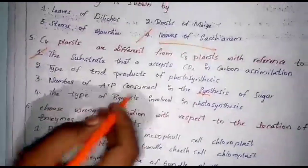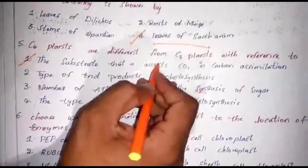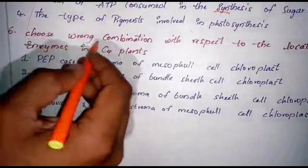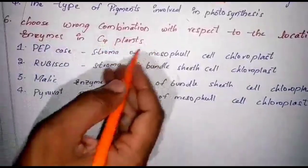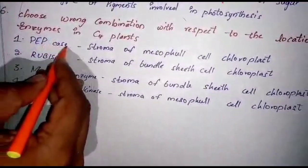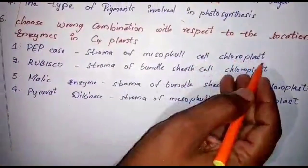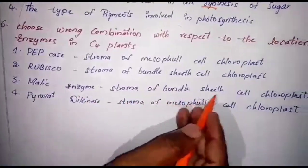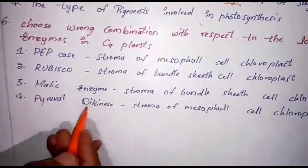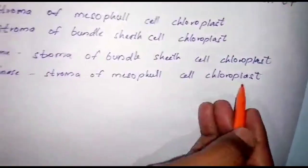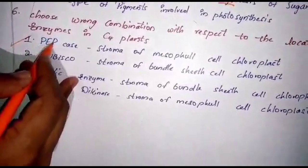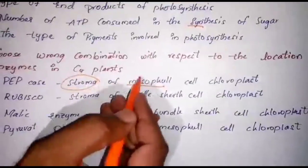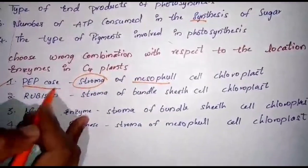The substrate that accepts carbon dioxide in carbon assimilation: C4 plants accept carbon dioxide in the form of bicarbonate ions, while C3 plants accept atmospheric carbon dioxide gas form. The sixth question: choose the wrong combination with respect to location of enzymes in C4 plants. PEP carboxylase in stroma of mesophyll cells — option two: rubisco in stroma of bundle sheath cells — option three: malic enzyme in stroma of bundle sheath cells — option four: pyruvate dikinase in stroma of mesophyll cells. Option one is wrong — PEP carboxylase is present in the cytosol of mesophyll cells, not in the stroma of the chloroplast.